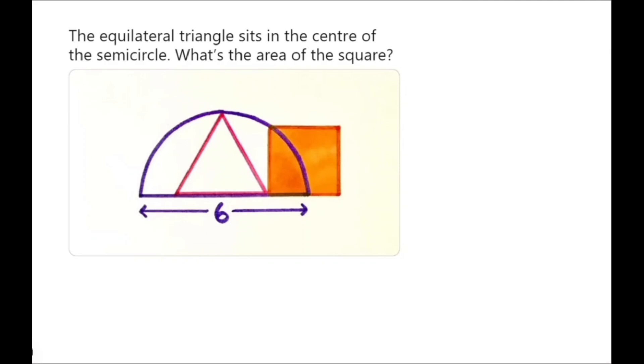Alright, so the only two assumptions we need to make for this are that the triangle is in the middle of the semicircle, and that the square and the triangle meet at this point here. Now that we have that down, let's solve.